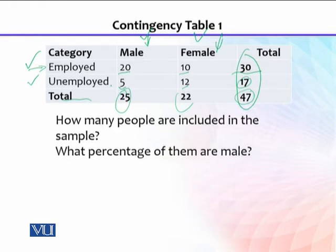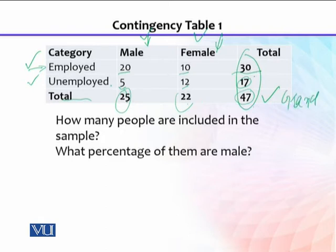The first question is very simple: how many people are included in the sample? Irrespective of gender or employment category, there are 47 students. You can count it as 30 plus 17 to get 47, or 25 plus 22 to get 47. This is the grand total. This is the row total and this is the column total, which is why we can do a chi-square analysis.